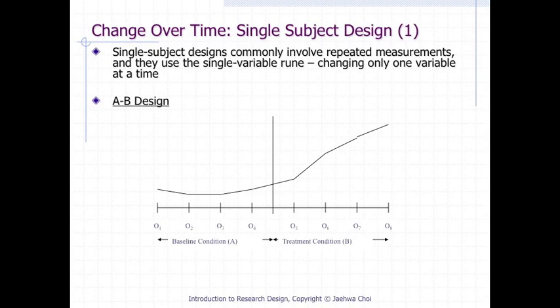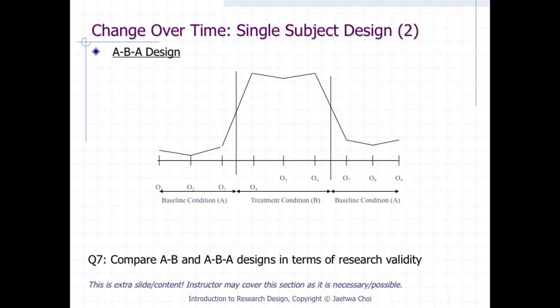Single subject design is easy in terms of data collection. It commonly involves repeated measurements and changes only one variable at a time. The AB Design in single subject research analyzes differences between a baseline period (A) and a treatment period (B). The ABA design provides more information on the effect of the B treatment compared to the simple AB design.